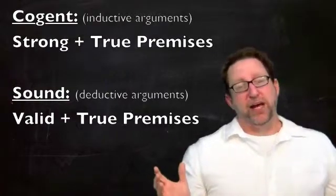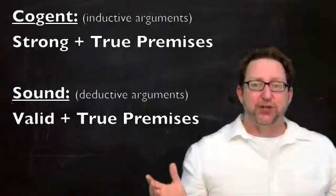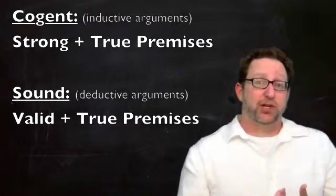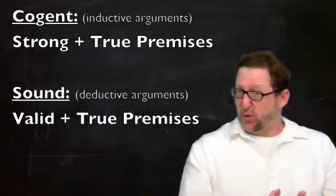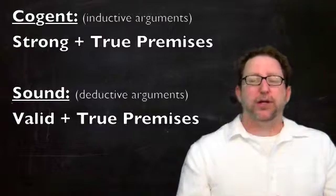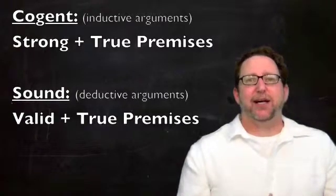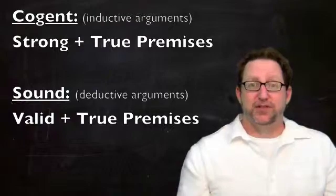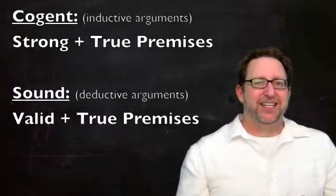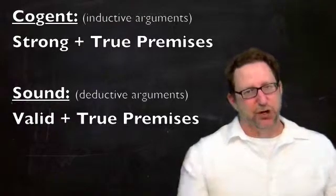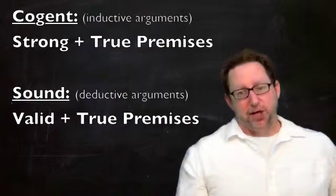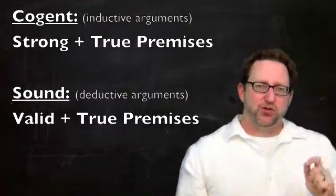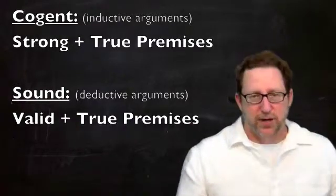And there are two ways in which an argument can fail to be cogent. It could fail to be strong, because the inferential claim is a bad one, or, and or, I should say, it could fail to have all true premises. So in order for an inductive argument to be a good one, in order for it to be cogent, it must be a strong argument and have true premises.